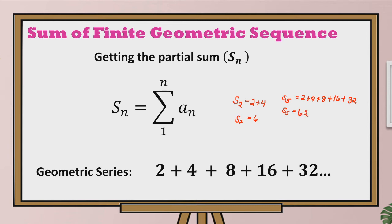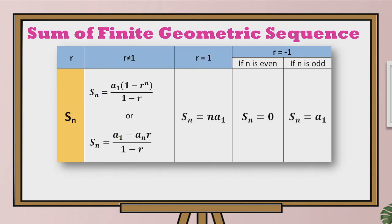This method of getting the partial sum of a finite geometric sequence works well with a lesser number of terms. But what if we deal with a large number of terms in a geometric sequence? These following formulas and conditions will help us out, but let's study this table first.